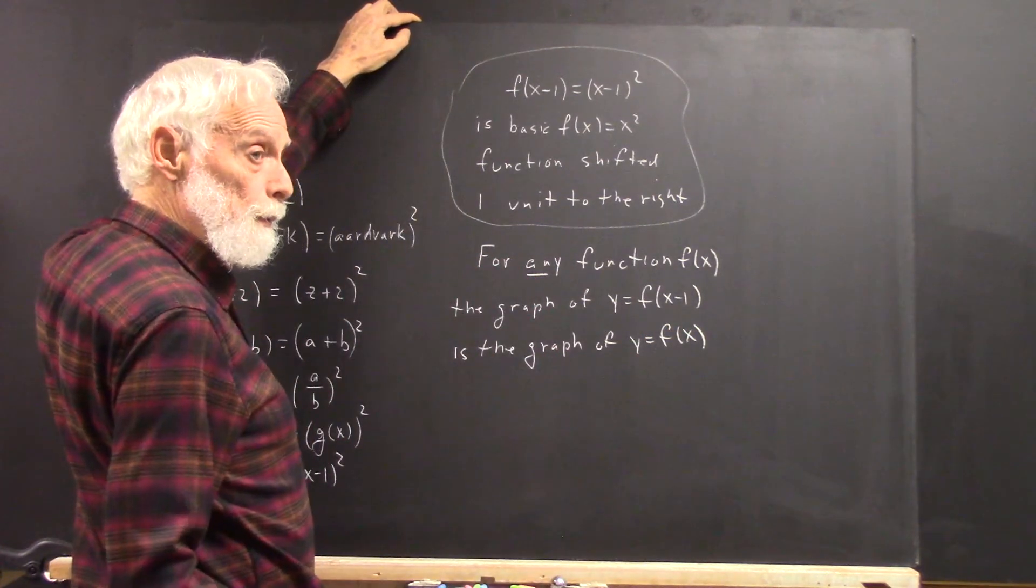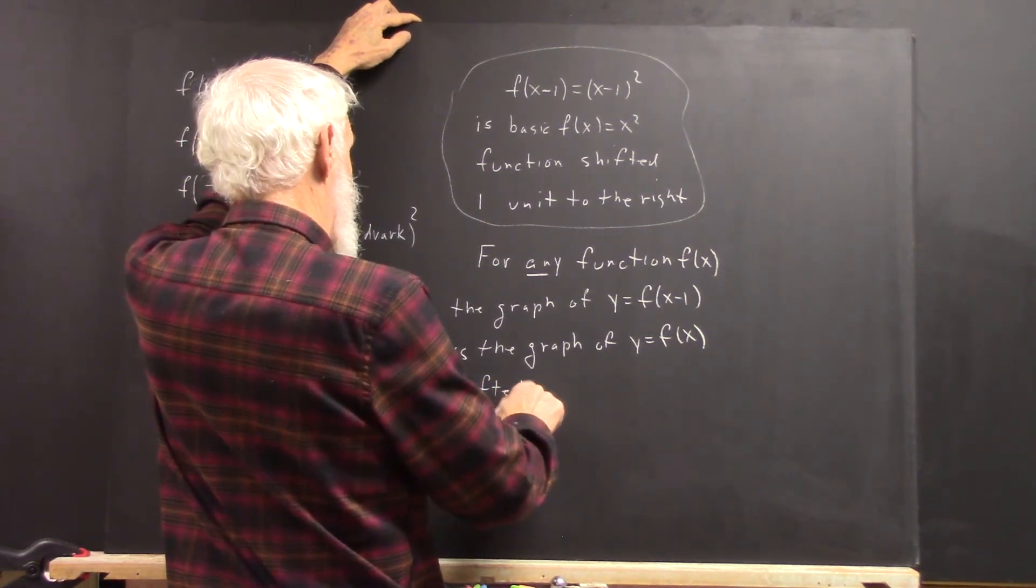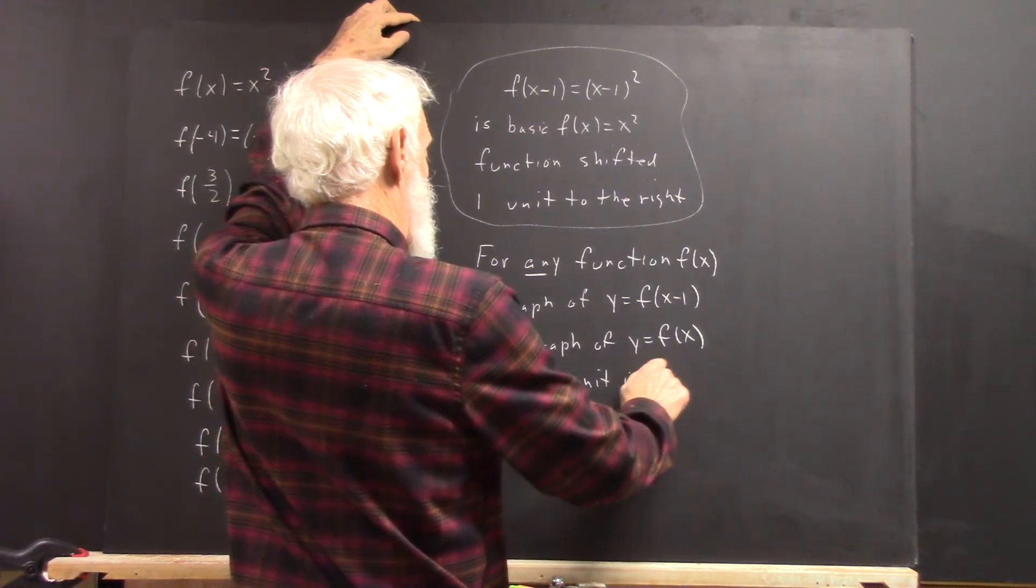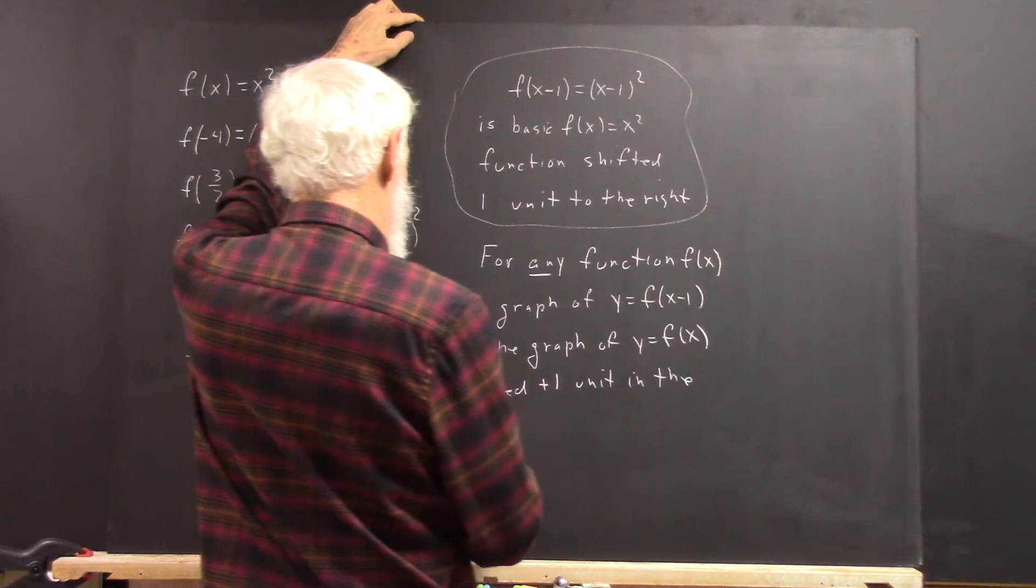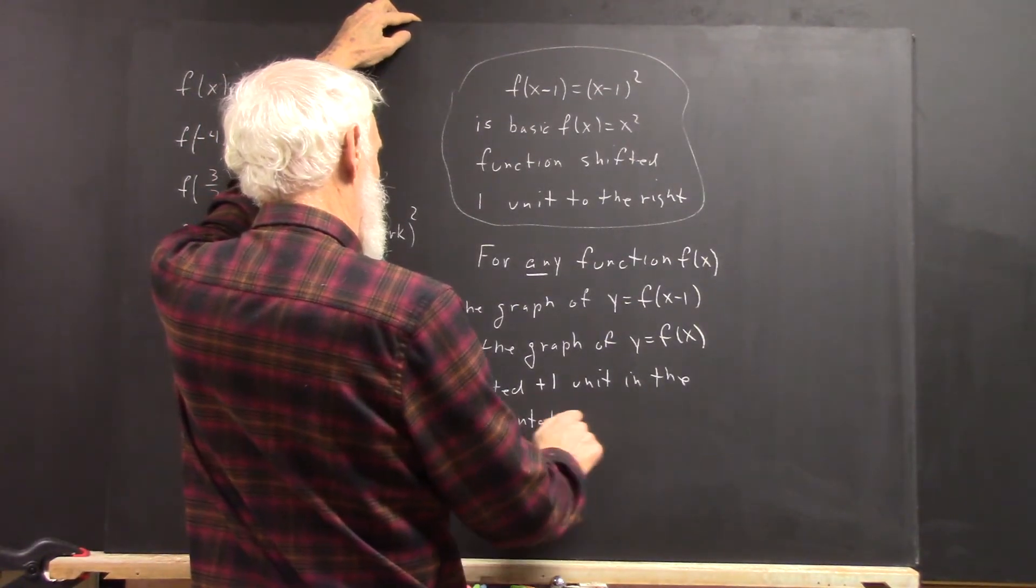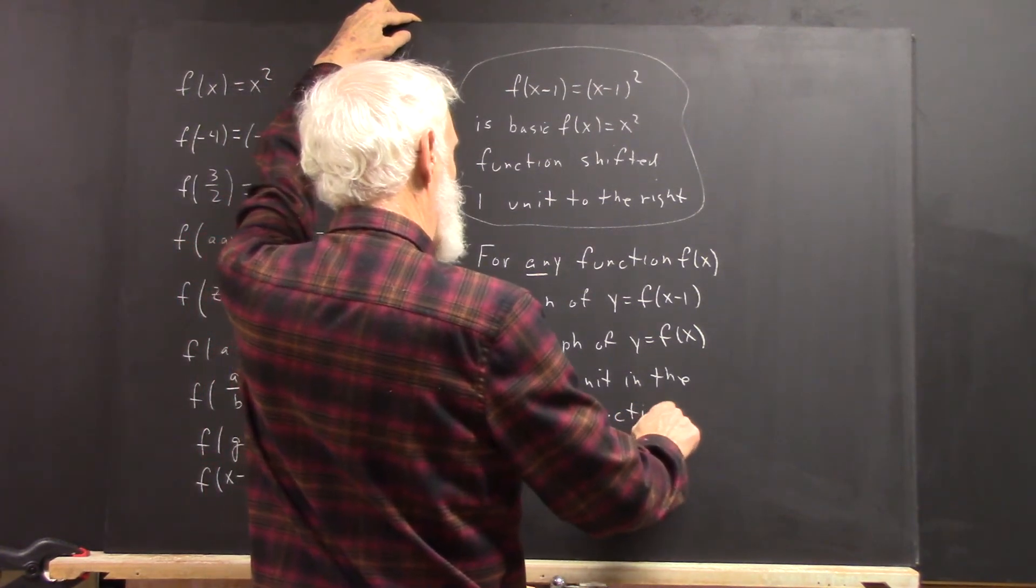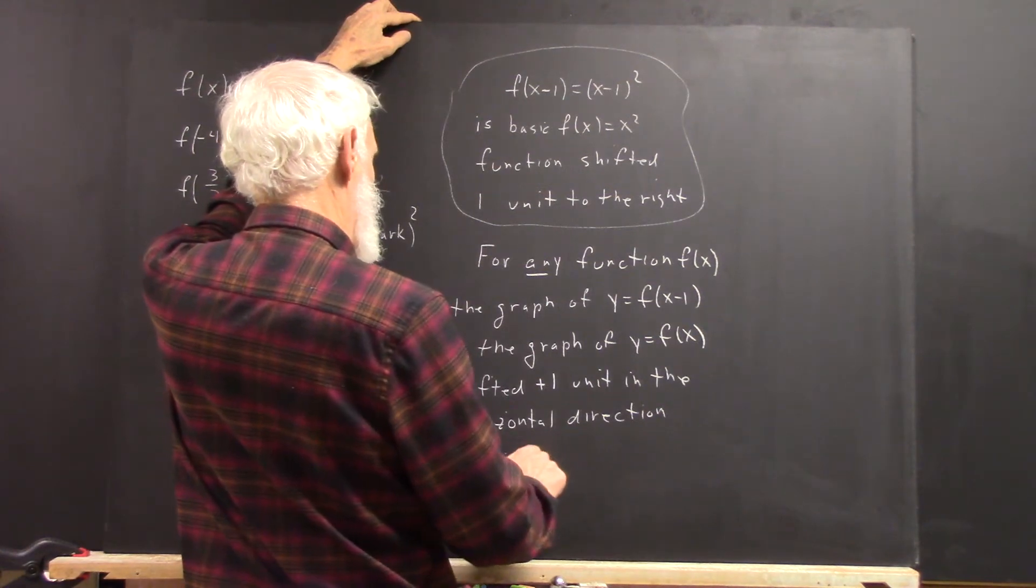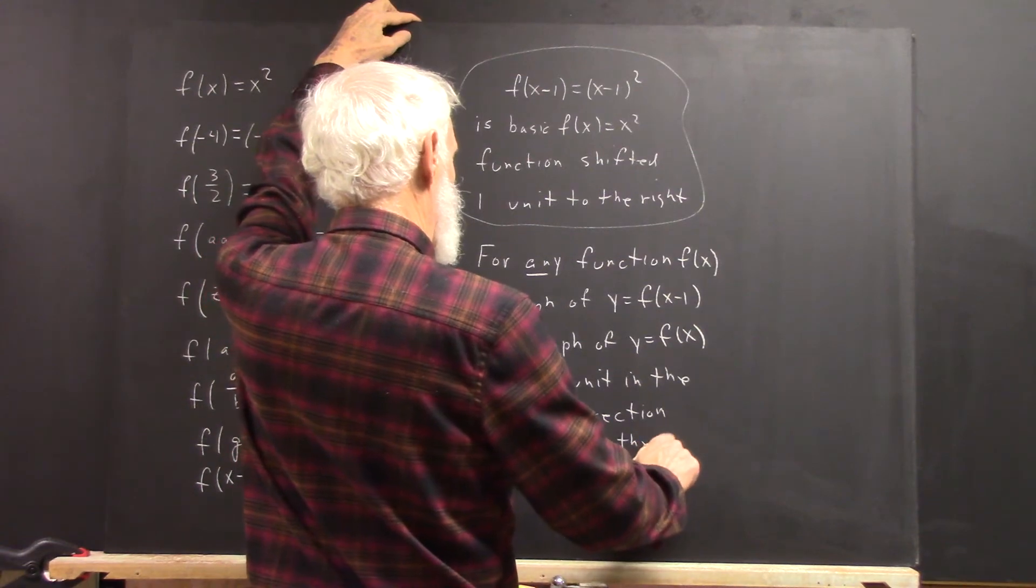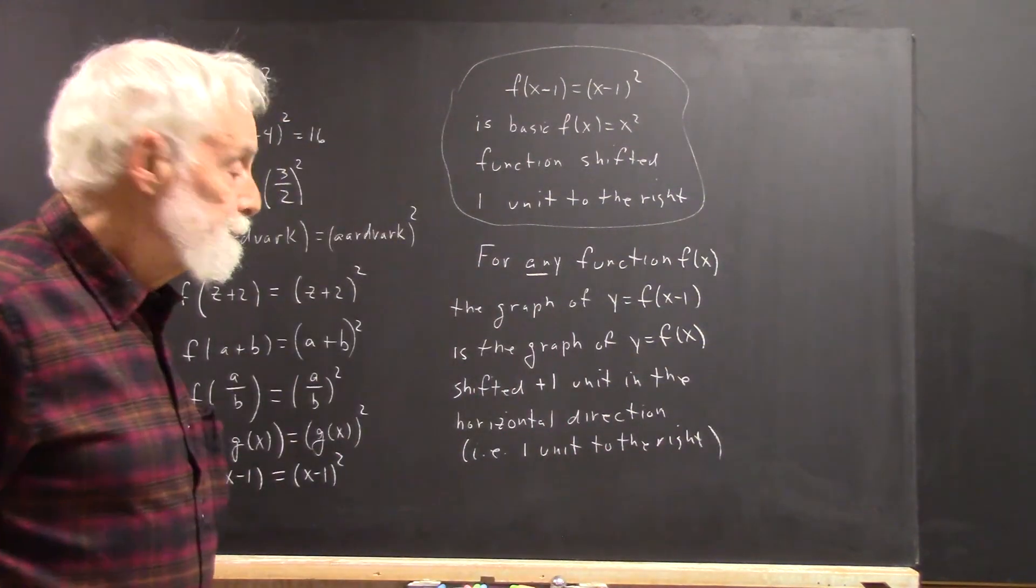Here's a graph of y equals f of x. Shift it one unit in the horizontal direction, which is one unit to the right.